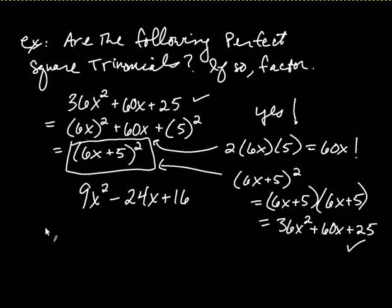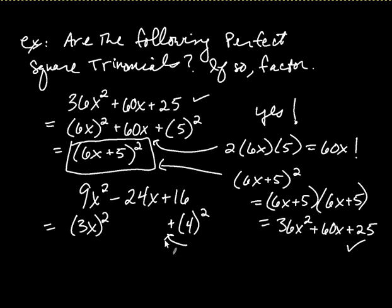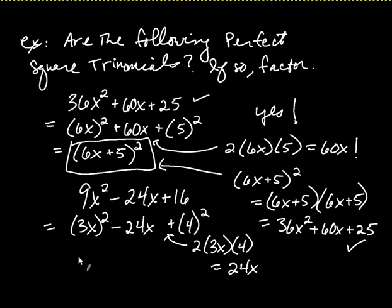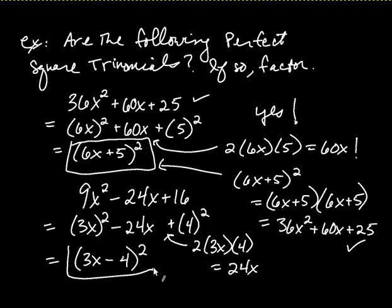Let's try another one. The key is recognizing that you have perfect squares on the ends. 9x squared is (3x) squared. And we're hoping the middle is negative 24x. The other end is 4 squared, which is plus 16. The middle has got to be 2 times 3x times 4. And what do I get? Well, 2 times 3x is 6x, times 4 is 24x. Indeed, I have a 24x — but notice there's a minus 24x. When you factor it, you still have 3x, but it's minus 4. So you get (3x − 4) squared.